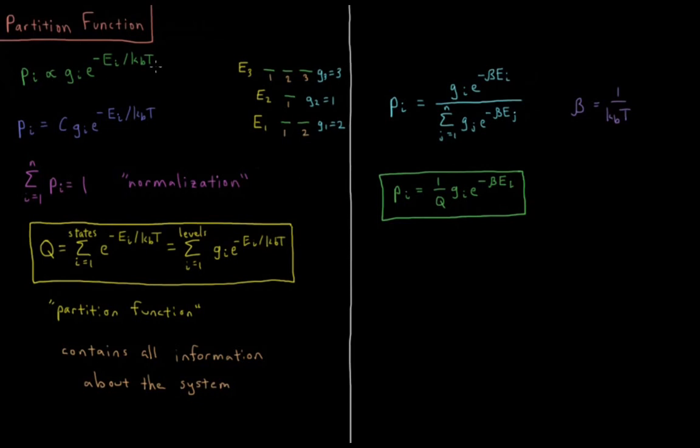Since we have this proportional relationship, there's some proportionality constant. So Pi equals C times Gi, the degeneracy, times the Boltzmann factor e to the minus Ei over kT. The question now becomes, what is this proportionality factor? How do we get our absolute probabilities of each individual state?